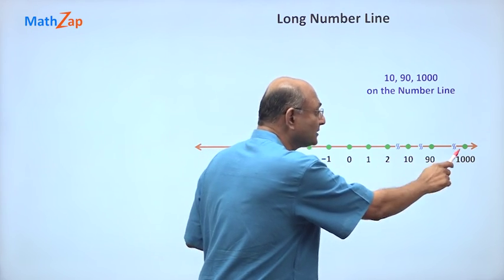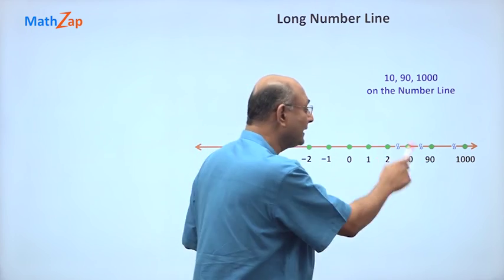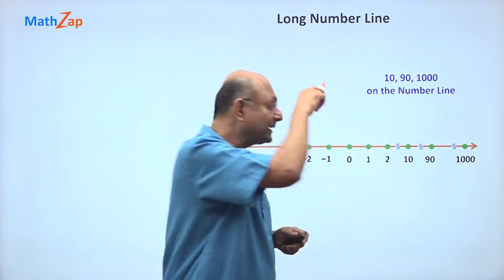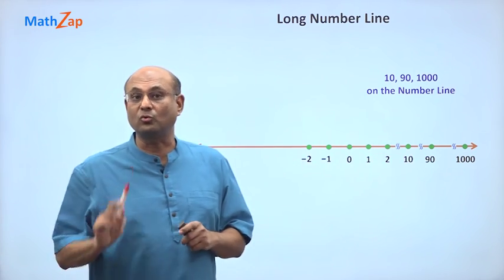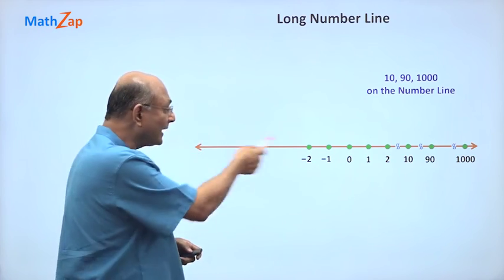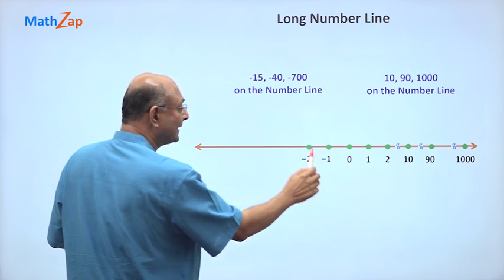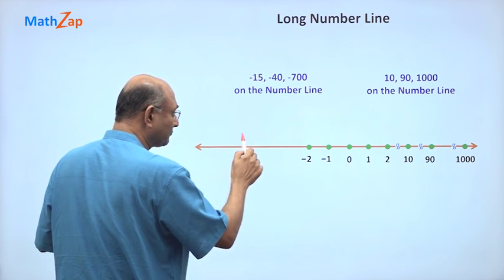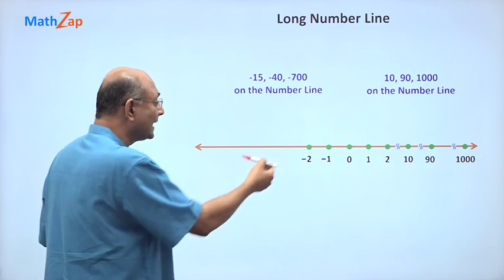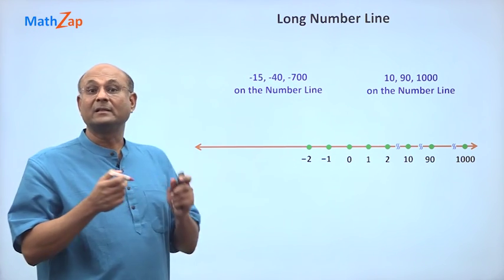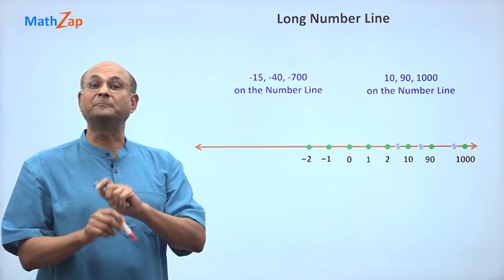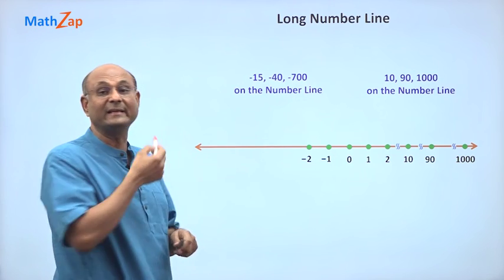The main idea is that 1000 is to the right of 90, 90 is to the right of 10, and 10 is to the right of 2. Suppose I move to the left side and let us plot some of these negative numbers. Minus 1, minus 2, minus 3, minus 4, minus 5. So I can keep plotting numbers like this. And as I move this way, the numbers decrease and the absolute value increases.